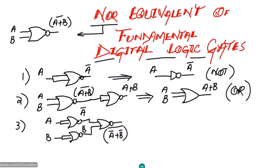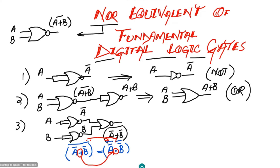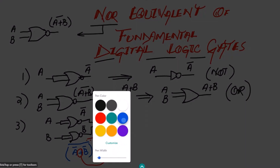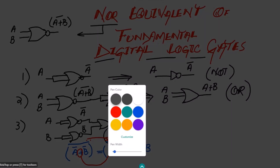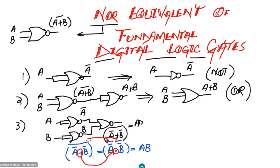At the output of the third NOR gate I get A complement plus B complement, whole complement. Simplifying using De Morgan's law: the complement distributes as A complement complement dot B complement complement, and the complement of a complement is positive. Therefore the output simplifies to A·B, which is the AND property — this is the AND gate.